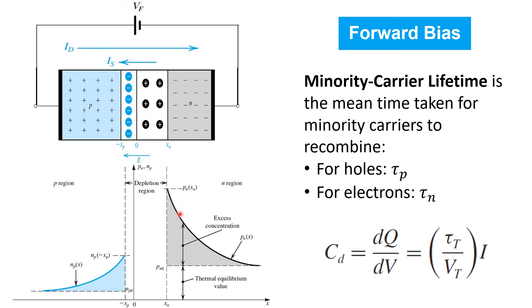As we've seen before under forward bias, we see an excess of minority carriers showing up on both the N side and P side of the junction. These excess minority carriers are an additional reservoir of charge that has to be supplied and taken away as a forward bias voltage is applied and removed. So therefore, it contributes to the total capacitance of the P-N junction in forward bias.